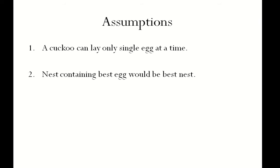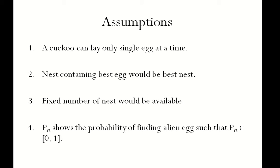A cuckoo can lay a single egg at a time, means at a time one solution would be generated. Nest having the best egg would be best nest, means nest itself represents the best solution. We start with the finite number of eggs, means there are finite number of initial solutions which would remain same throughout the algorithm. There is a variable p-alpha which shows the probability of finding alien egg or the egg of cuckoo by host bird. The value of p-alpha lies between 0 to 1, lower the value of p-alpha, lesser the chance of finding alien egg by host bird and vice versa.